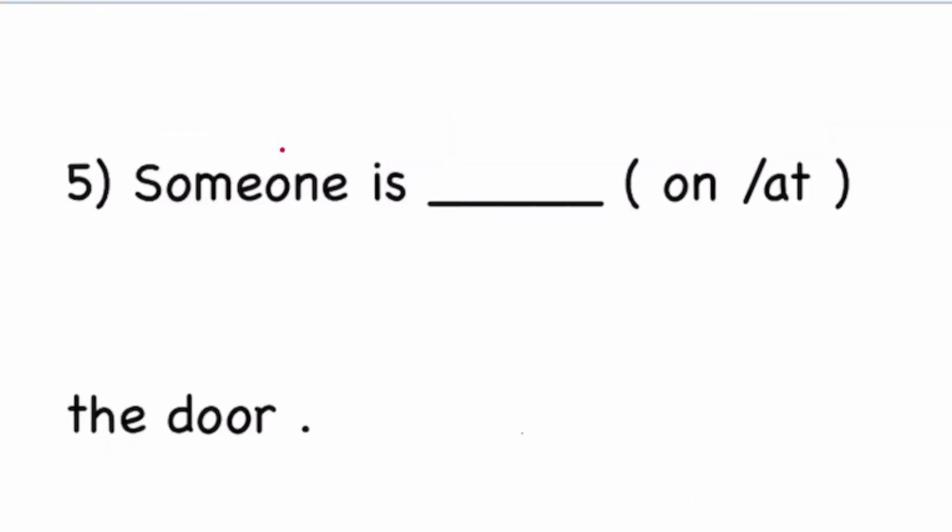Next is: someone is on or at the door? Which is the correct option? At means waiting in front of the closed door, waiting for entry. Whereas the preposition on means something or someone is in physical contact with the door. You cannot be on top of the door, right? You cannot be touching the door. You are just standing in front of a closed door. So the correct option is at.